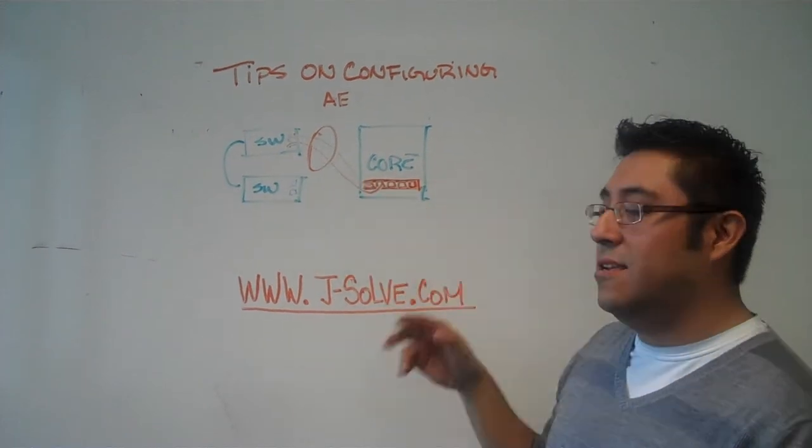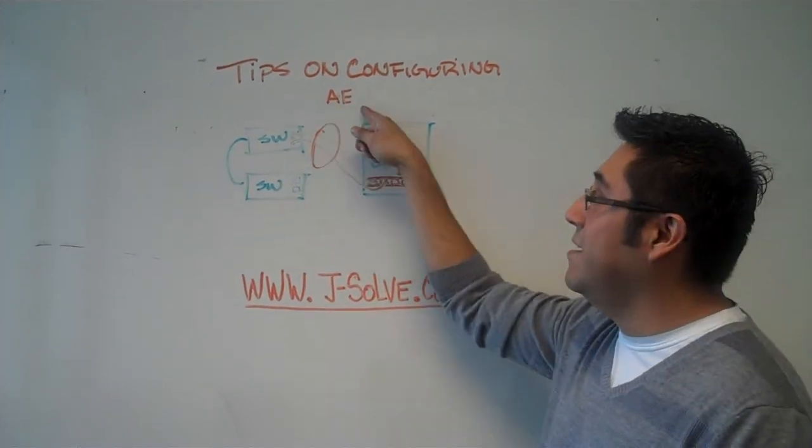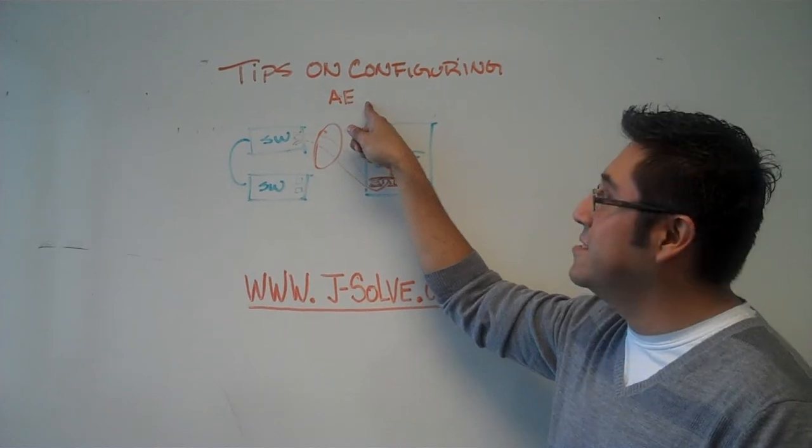So if you had the need to provide higher bandwidth, aggregated Ethernet interfaces is the way to go.